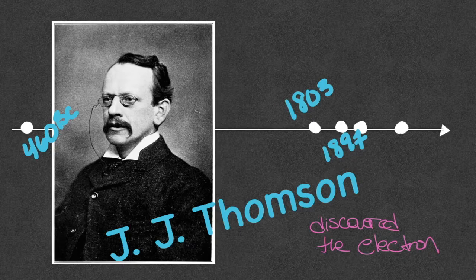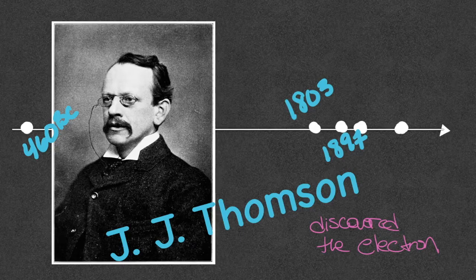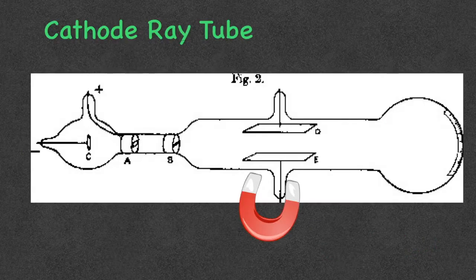The first subatomic particle discovered was the tiniest one with the least amount of mass — the electron. J.J. Thompson found this electron using an experiment called the cathode ray tube. This device is called a cathode ray tube — you would find cathode ray tubes in old monitors, those old big bulky TVs with the big backs on them.